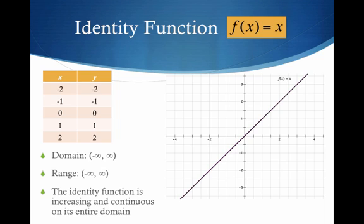Let's go through the simplest one — it's called the identity function. This is where y equals x, or f of x equals x. For every x I plug in, I get that as my y. Notice how our x's and y's match. The domain and range — it's a line — is negative infinity to infinity. It's increasing and continuous on the entire domain.